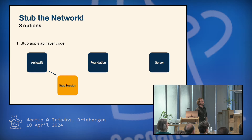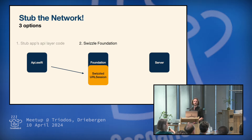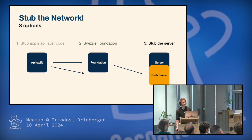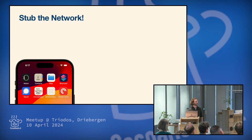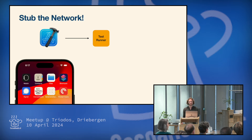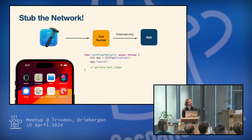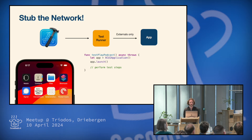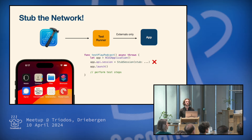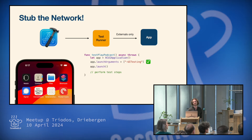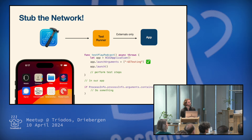The first one is that we could stub NSURLSession inside of our own code. The second one would be to swizzle Foundation, swizzle NSURLSession and stub it that way. And the third one is to stub the server. But before we do it, we have to remember how these UI tests are actually set up. So Xcode will create a test runner for your app, and then basically the test runner will launch your app and will execute the UI test. But the test runner can only access all the externals of your app — it can't just say app.api session and stub away the session. But what we can do in the test runner is tell the app with a launch argument that it's running a UI test. And then in our app, we can check the process info to see if we are UI testing.